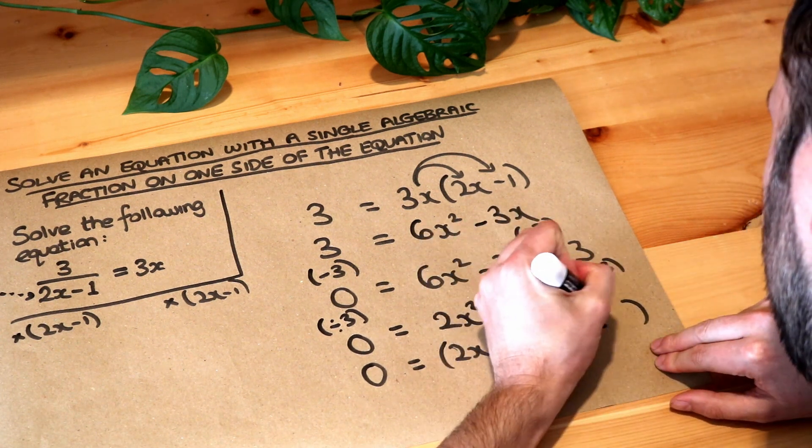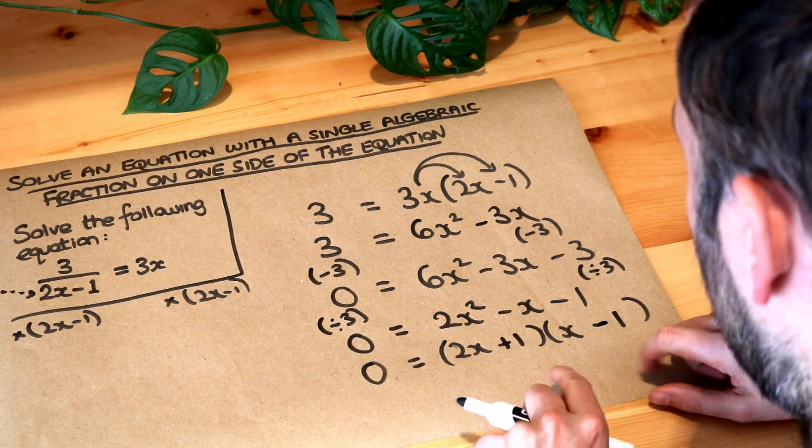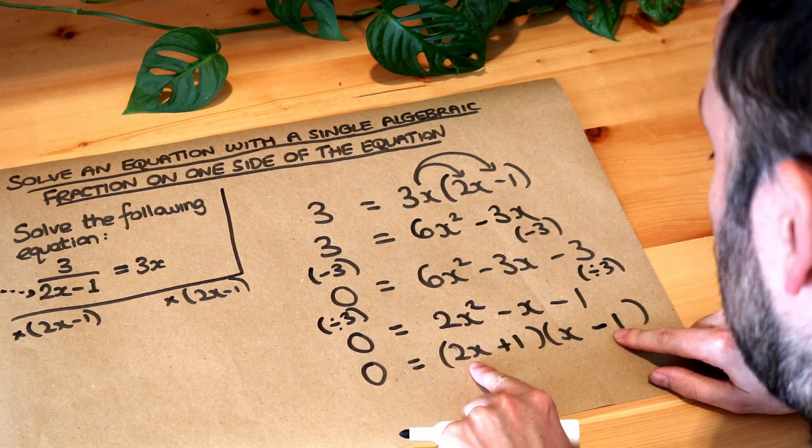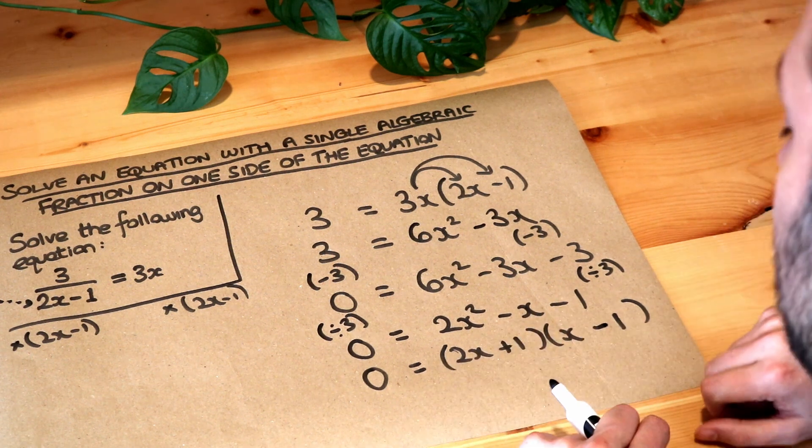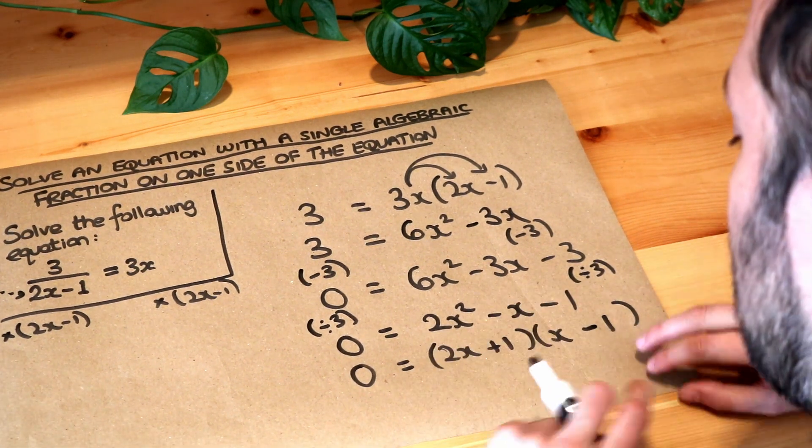Now I believe it's this way around because then in the expansion you get 2x times minus 1, which is minus 2x, plus x, which will be minus 1x. So that will expand to give that.